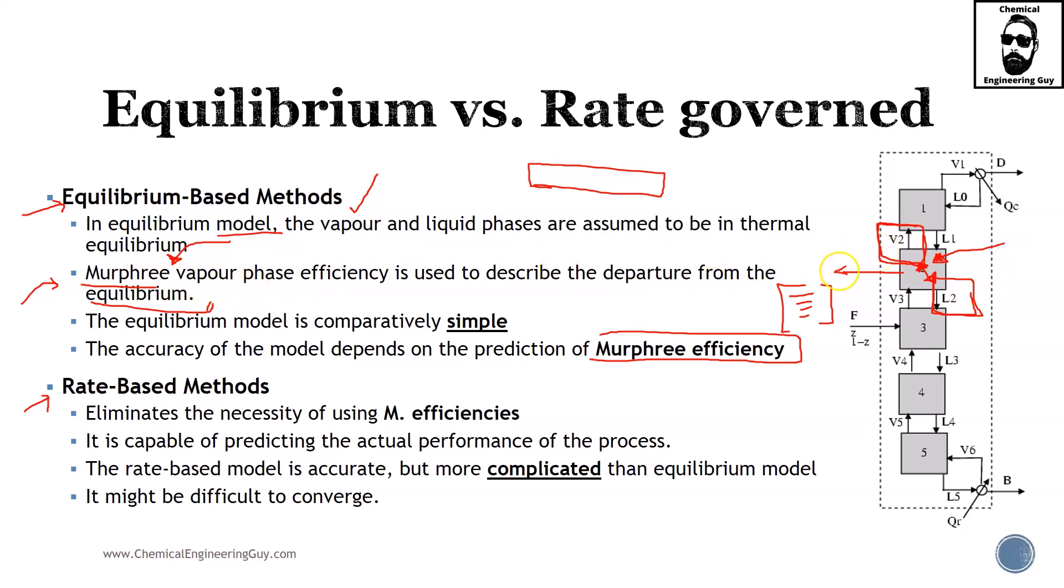Now rate-based methods. Someone stated, why should we always assume equilibrium? Why wouldn't we go for a rate-based model? The good thing here is you don't need to assume a model for the efficiencies because we will be calculating the actual behavior of this stage. This one right here and this one right here are no longer assumed to be in equilibrium. We're going to do individual energy, mass, and equilibrium balances, calculate the respective fluid flow, the rates going in and out, and assume there is no equilibrium. We are going to calculate this by the actual conditions in the column. It is capable of predicting the actual performance of the process.